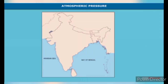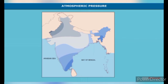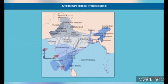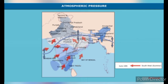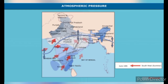Air always moves from high-pressure areas to low-pressure areas. This horizontal movement of air is called wind. Winds cause changes in weather conditions and bring rainfall. For example, in summers, because of low pressure over land, winds move from the Indian Ocean towards the Indian landmass. Since these are moisture-laden winds, they cause heavy monsoon rainfall throughout India.